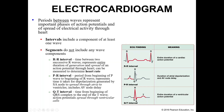The P-to-R interval runs from the beginning of the P wave to the beginning of the R wave. This is the amount of time it takes for depolarization to spread through the atria, and it also includes the AV node delay. The QT interval runs from the beginning of the QRS complex through the end of the T wave — this is how long it takes for action potential to spread through the ventricular chambers and produce ventricular contraction.